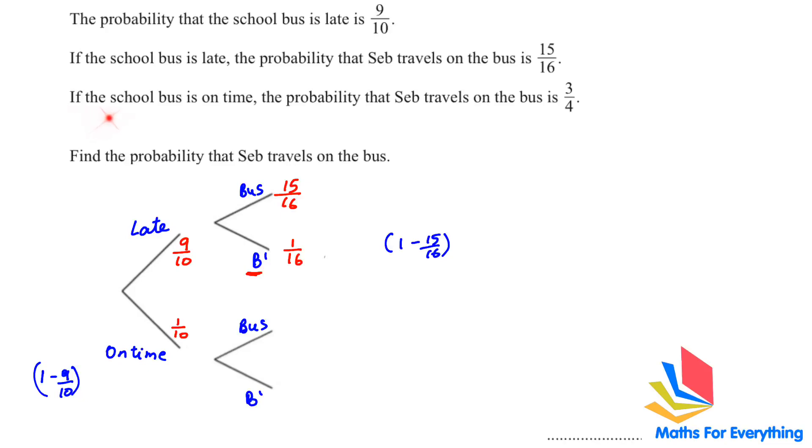The next information we have, if the school bus is on time, we are looking at this branch. Seb travels on the bus is 3 over 4. So, if the bus is on time, he travels on the bus is 3 over 4. And then, not travel on the bus will be 1 minus 3 over 4, which will give us 1 over 4. So, now we have got our probabilities.